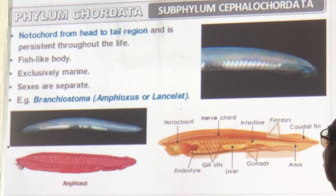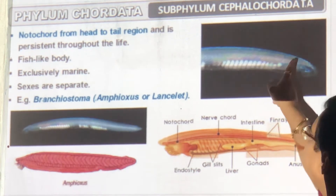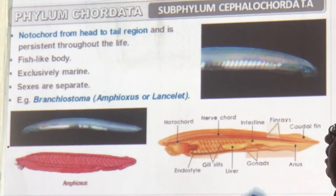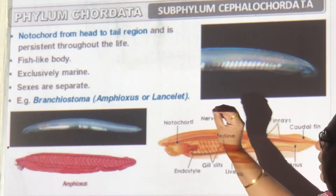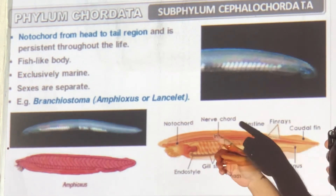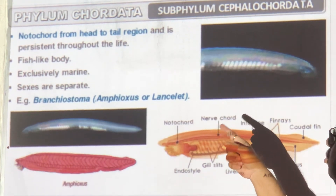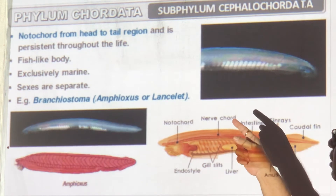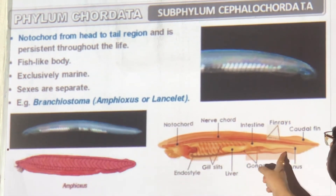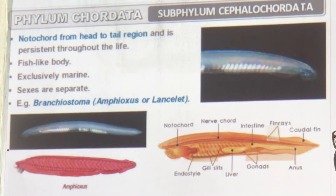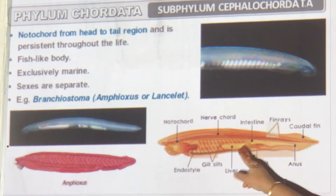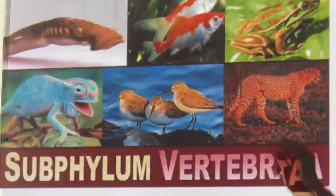Cephalochordata: the notochord is complete and runs the full length. They have a fish-like body and are found only in the sea. Male and female are separate. The example is Branchiostoma — also called Amphioxus or Lancelet, shaped like a spear. You can see gill slits, gonads, and a notochord.